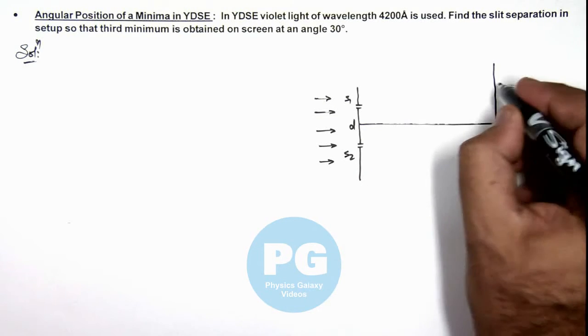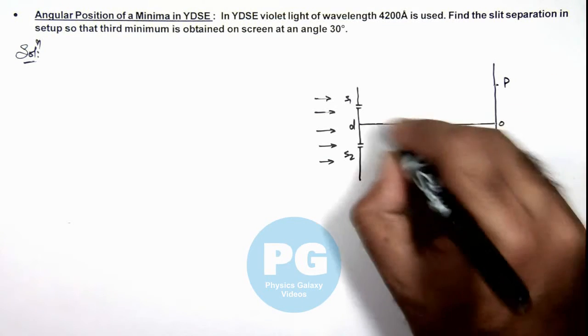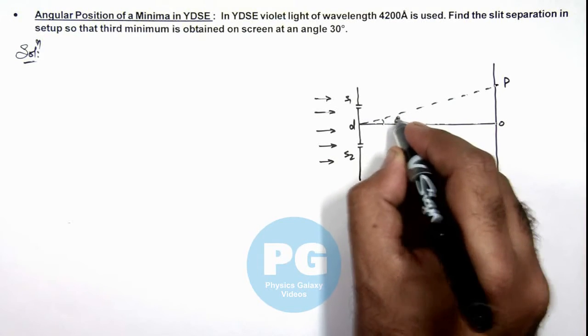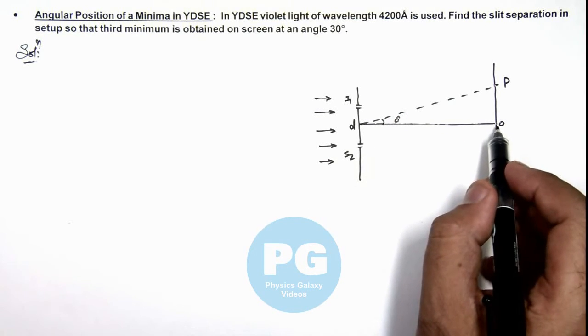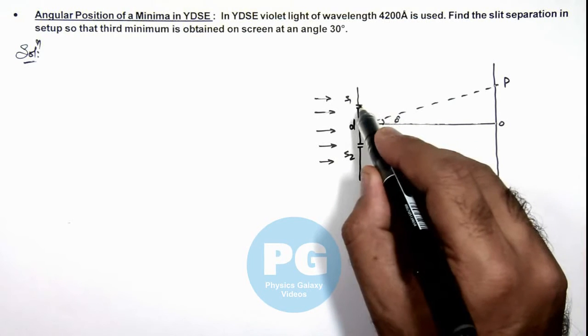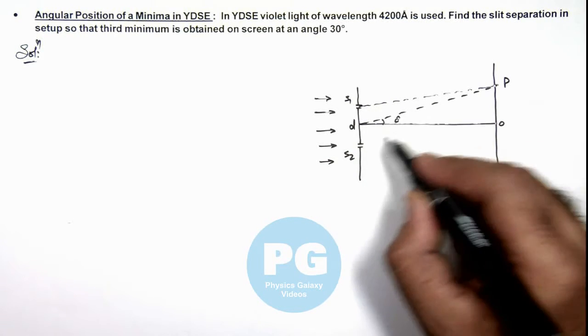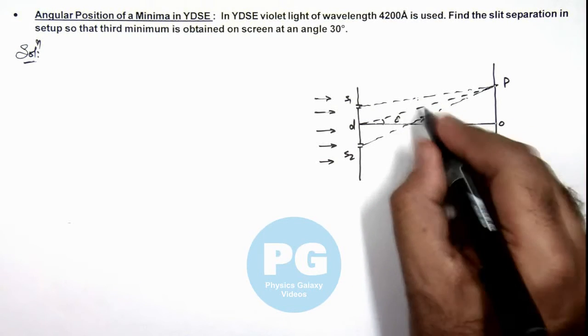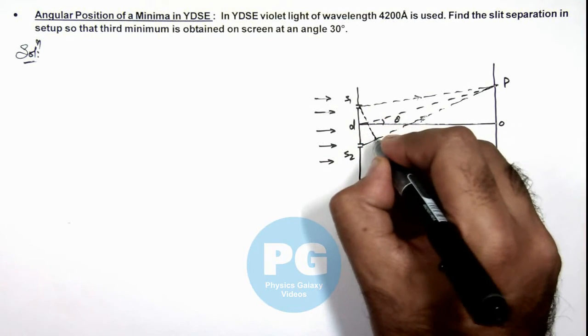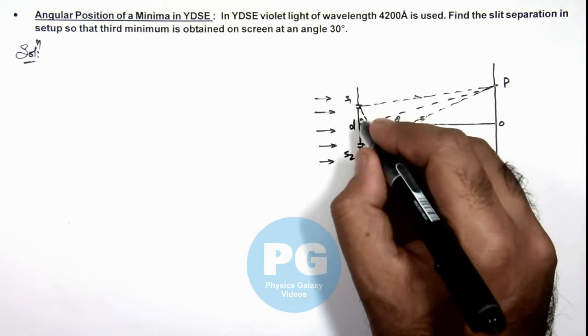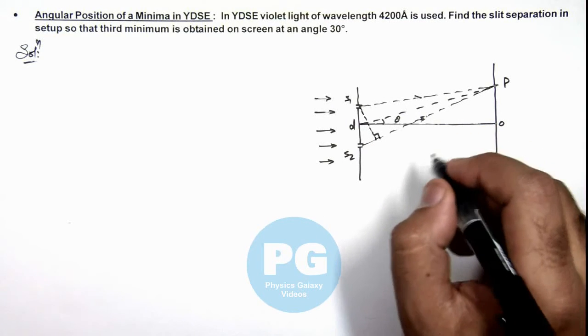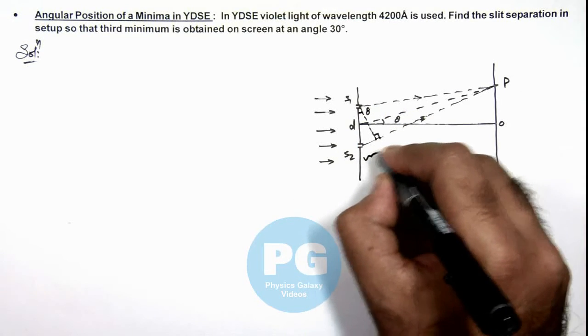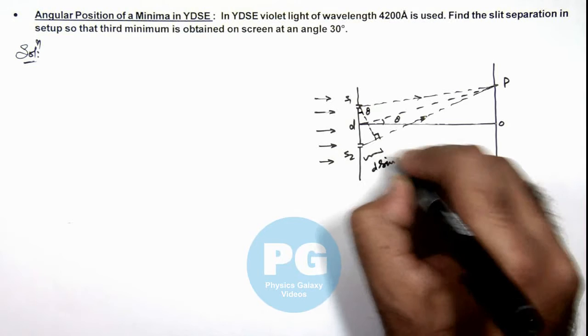And here if we consider a point P on screen which is located at an angular distance theta from the center of screen, then in this situation if we talk about the path difference in the two light beams reaching point P from S1 and S2. For these two light beams, path difference can be obtained by dropping a perpendicular from S1 to the line S2P. Now in this situation, if this angle is theta, this is also taken as theta, and this is the path difference which we can write as d sine theta.